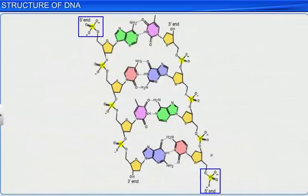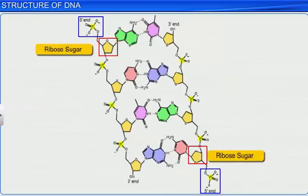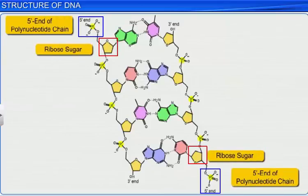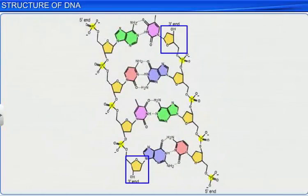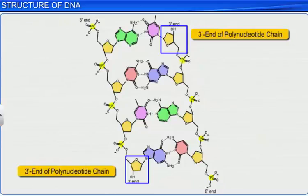At one end of this chain is a free phosphate moiety at the 5' end of ribose sugar, which is called the 5' end of the polynucleotide chain. Similarly, at the other end of the chain is present a ribose with a free 3'-OH group, which is called the 3' end of the polynucleotide chain.